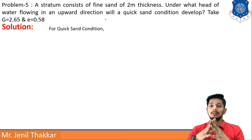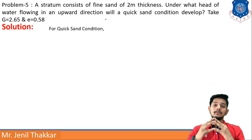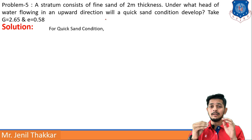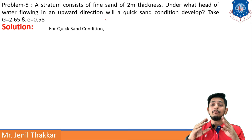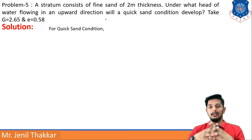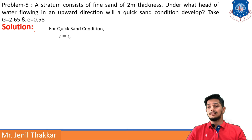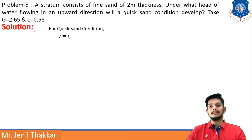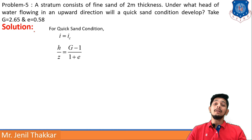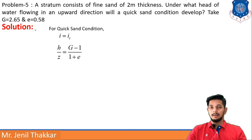Quick sand condition occurs when effective pressure becomes zero and soil particles are uplifted — also called sand boiling. The condition is i = ic, where i is the hydraulic gradient and ic is the critical hydraulic gradient. Here i = h/z and ic = (G − 1)/(1 + e).